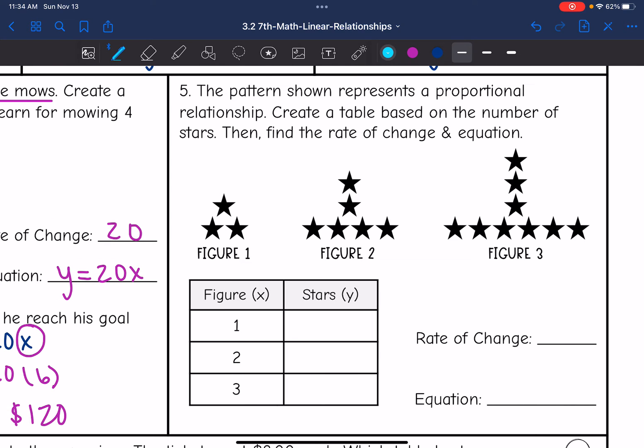Let's look at 5. The pattern shown represents a proportional relationship. Create a table based on the number of stars, then find the rate of change and equation.